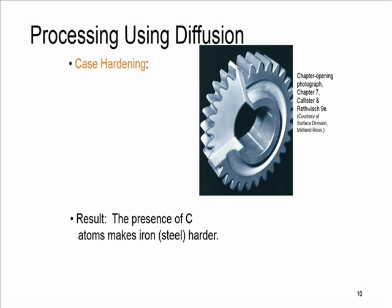Diffusion is used in processing. An example is case hardening, where the external surface of a part is hardened. Here, carbon atoms diffuse into the host iron atoms at the surface. This is an example of interstitial diffusion. This photo shows a case hardened gear. As a result of the presence of more carbon atoms in the iron, we now have a harder iron or steel.